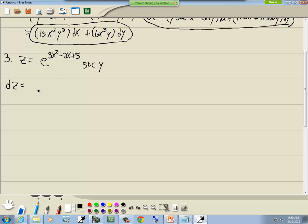Secant y is just a constant so it stays out in front. The derivative of e to the power is e to the power, that doesn't change. But since it's more than just a single x up here, you have to multiply it times the derivative of what's inside the exponent, which would give us 6x minus 2. And then my secant y remains, dx.